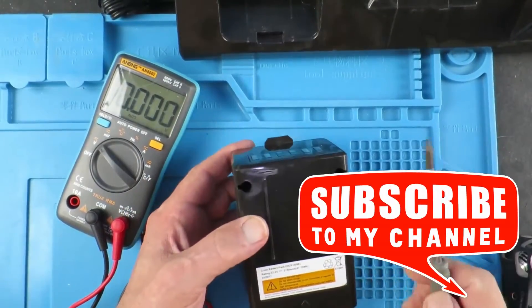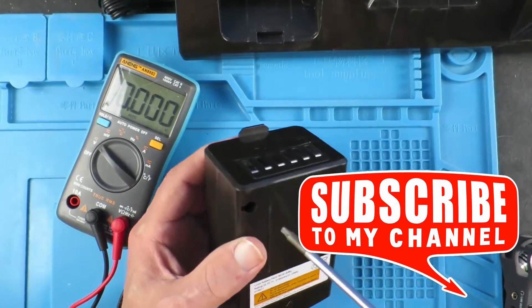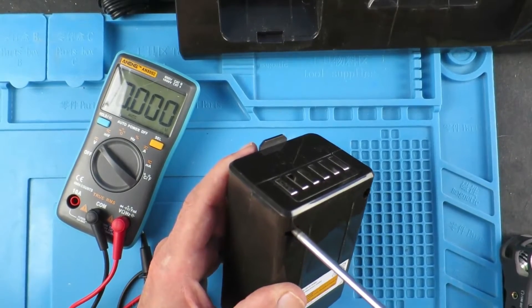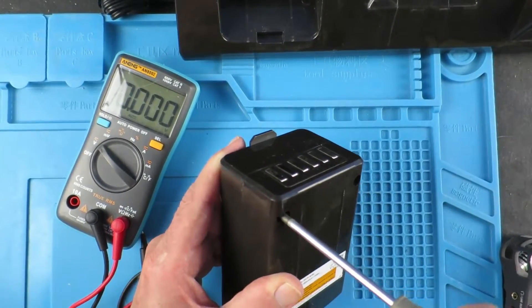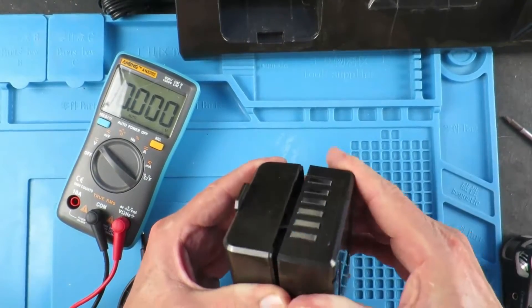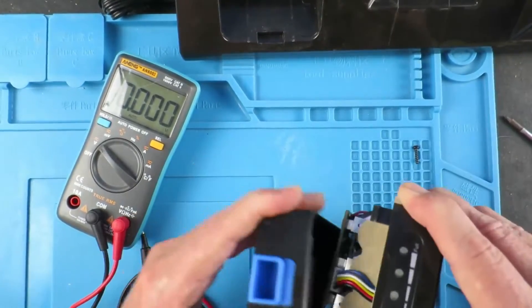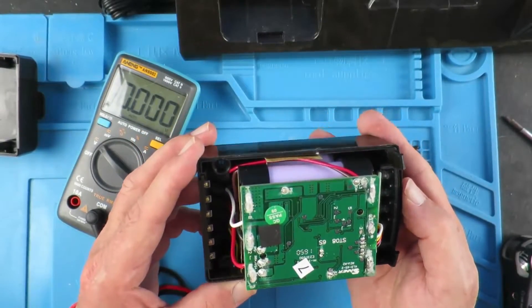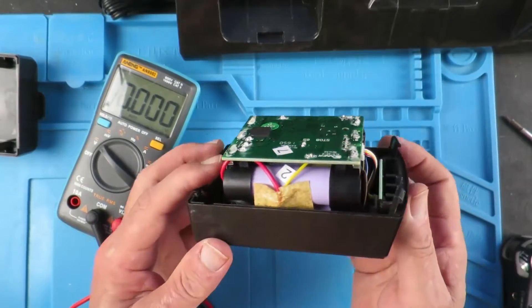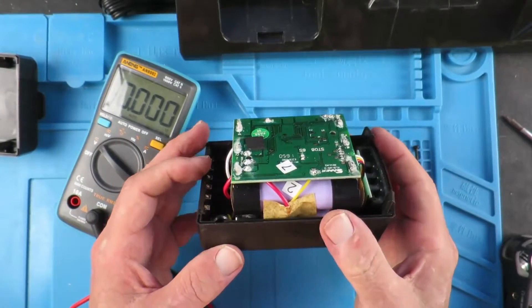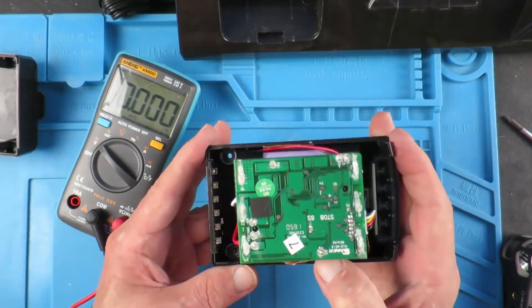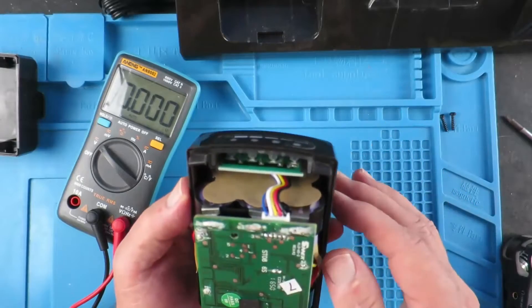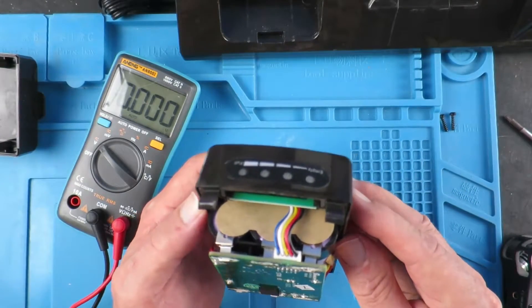Looking down the holes I can see that it uses a Torx type screw, not even one of the security types. Here we can see it in all its glory. There appears to be just a standard pack of 18650 type cells. The other cable up here goes to the LED display for the charge condition.